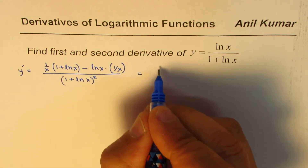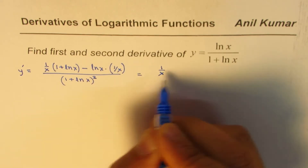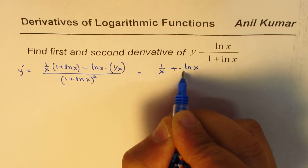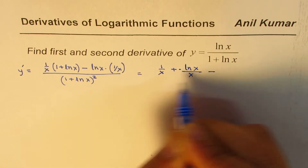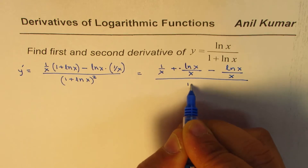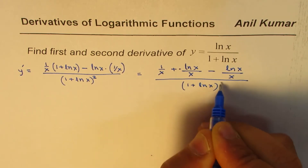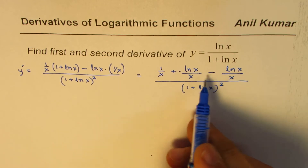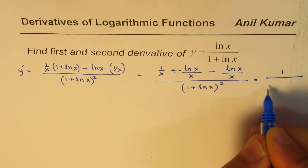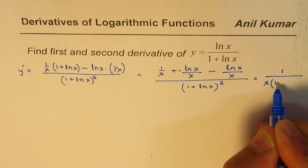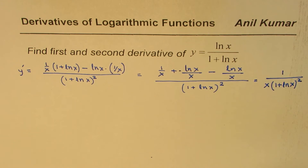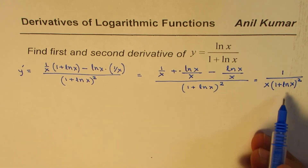We can simplify this: opening the bracket gives 1/x plus ln(x)/x minus ln(x)/x, all over (1 + ln(x)) whole squared. These two terms cancel, so we are left with 1/x. We can write this as 1/x times (1 + ln(x)) whole squared. That is the first derivative.